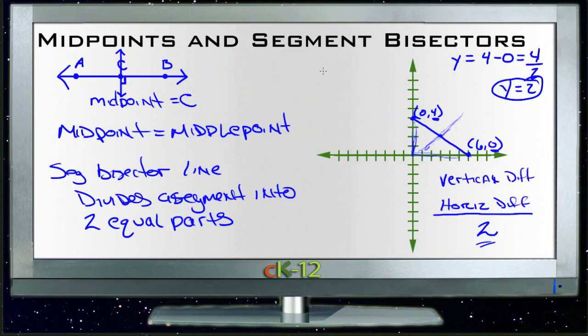Then our x coordinate would be the difference between 0 and 6, so 6 minus 0 is going to be 6, and we divide that by 2, which tells us our x coordinate is 3. So for our midpoint, we go over 3 - 1, 2, 3 - and we go up 2 - 1, 2. And so that midpoint is 3, 2.